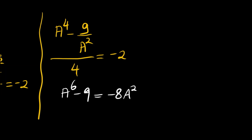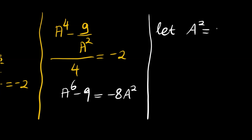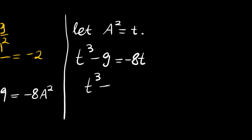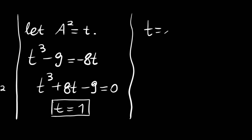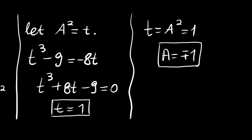This is our equation. Now let A squared equal T, then we have T cubed minus 9 equals negative 8T, which rearranges to T cubed plus 8T minus 9 equals 0. By the rational zero theorem, T equals 1 is a root and the only real root. Using synthetic division, the other quadratic factor has no real roots. So T equals 1, and since T equals A squared, A equals plus or minus 1. It doesn't matter which sign we choose due to the symmetry of the factorization.